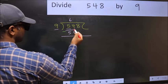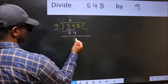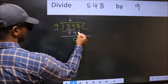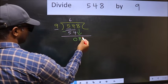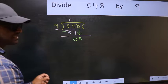Now you should subtract 54 minus 54, which equals 0. After this, bring down the beside number, so 8 down. After this step, the mistake happens.